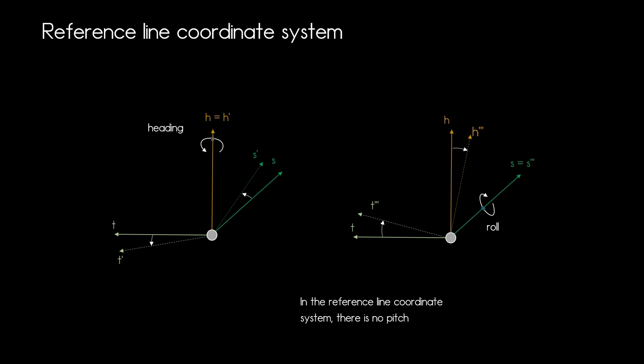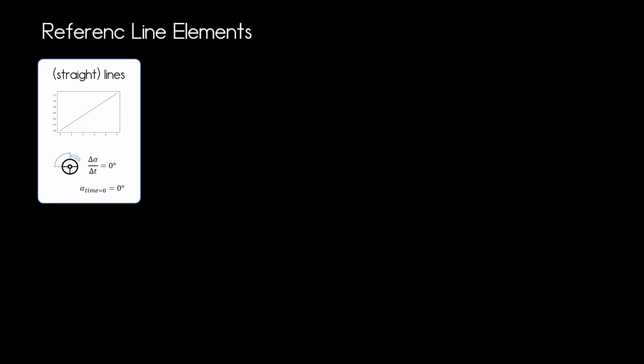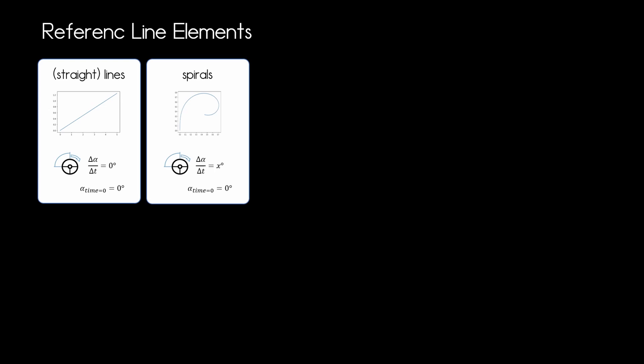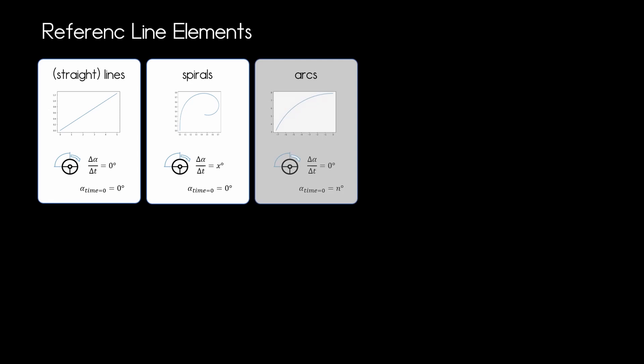Next up we are going to see how we can actually define the reference line. There are several different elements in OpenDrive for this. The first is a line element — a straight line with a starting point, a heading, and a length; when driving over this line the steering angle does not change. For curves, OpenDrive lets you define spirals, which have a start and end curvature, enabling smooth curvature transitions that avoid jumps in the steering angle. For going around a corner with a constant steering angle, OpenDrive lets you define an arc — a piece of reference line with constant curvature. These three elements are ideal when modeling OpenDrive networks by hand.